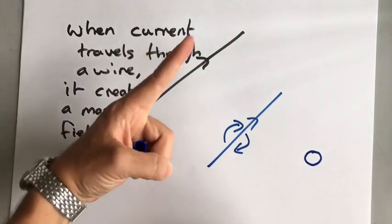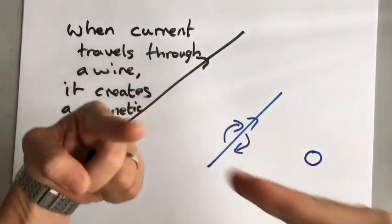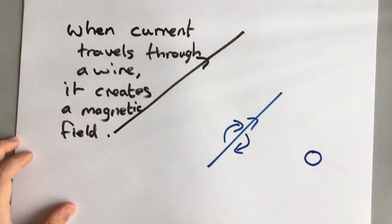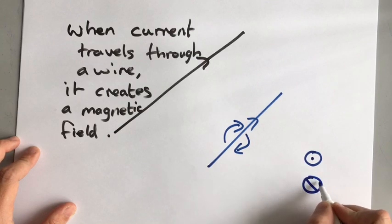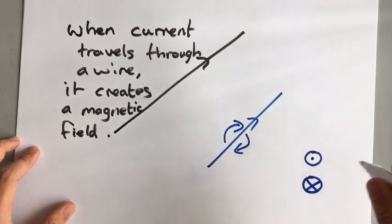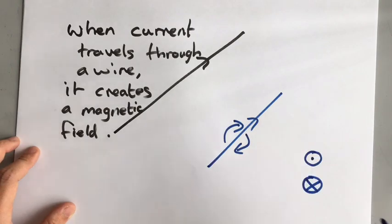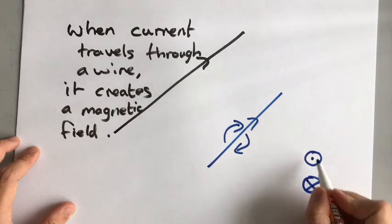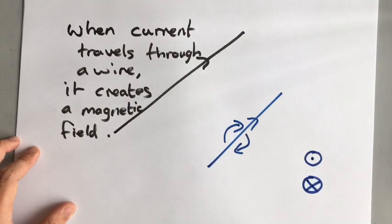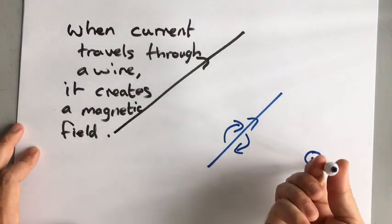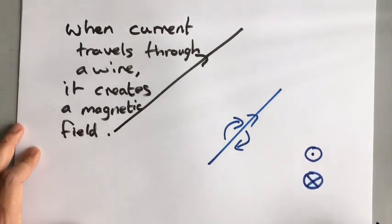A cross section means if you took a wire, cut it in half, and looked at the end. Now the way that we indicate which direction current is travelling — because we can't draw an arrow into or out of the page — is with an X or a dot. An X means the current is going away from you, and a dot means the current is coming towards you.